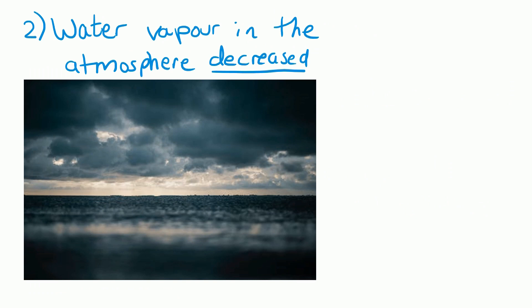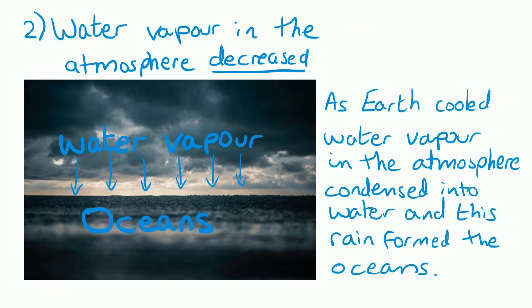Secondly, the amount of water vapor in the atmosphere has decreased, and that's because as the earth cooled, the water vapor in the atmosphere condensed into liquid water and this formed rain. As the rain fell it formed the oceans, so we've got it changing from water vapor in the atmosphere into the water of the oceans.